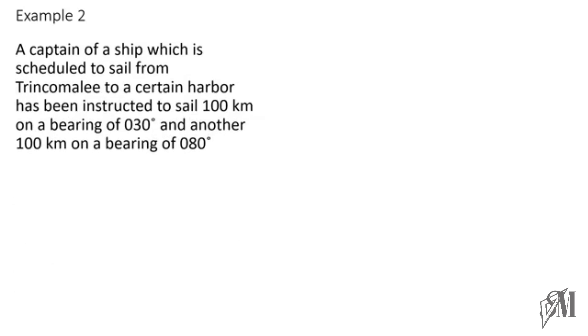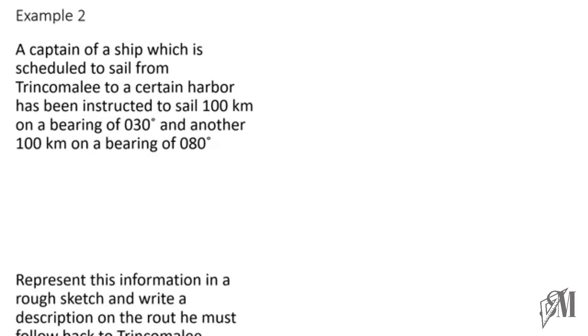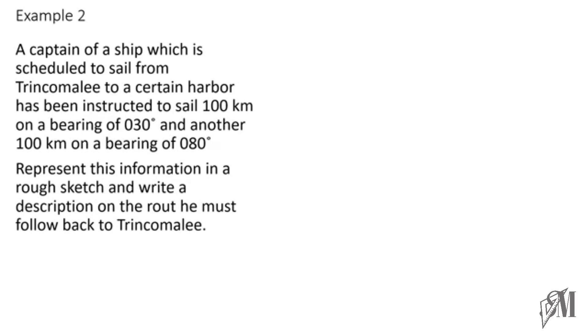The next example: a ship captain scheduled to sail from Trincomalee is instructed to sail 100 km on a bearing of 030 degrees, then another 100 km on a bearing of 080 degrees. We are to represent this in a rough sketch and describe the return route back to Trincomalee.